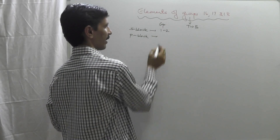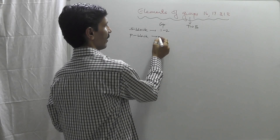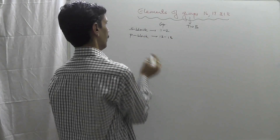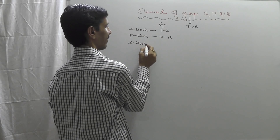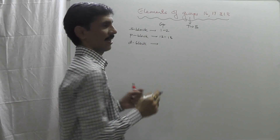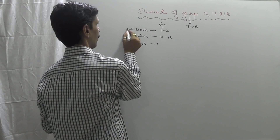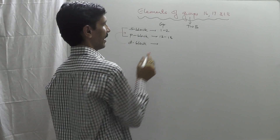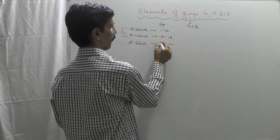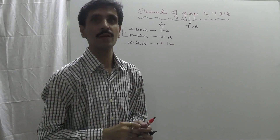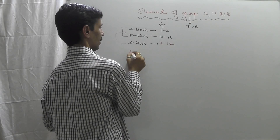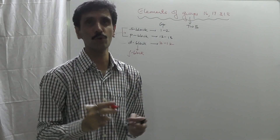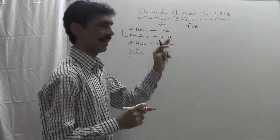In P-block, the capacity is six, so as a result it goes from group 13 to 18. Between S and P are the D-block elements, which go from group 3 to 12. The F-block is a part of the D-block elements, so it doesn't have a separate group. In total, there are eighteen groups in this classification.